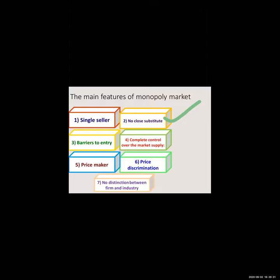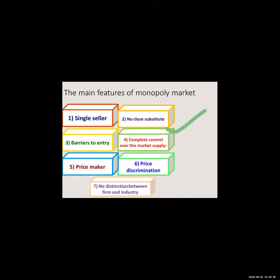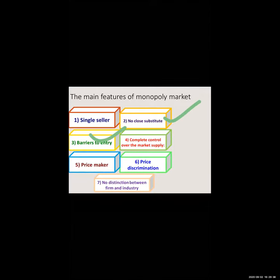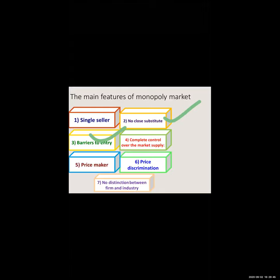Third feature: barriers to entry — there are many rules and regulations because of which the particular firm enjoys complete monopoly. Entry of rivals is restricted due to legal, natural, and technological barriers which do not allow competitors to enter the market. For example, copyrights or patents — because of these, there are barriers; if someone wants to compete, they cannot do so due to legal regulations and laws.